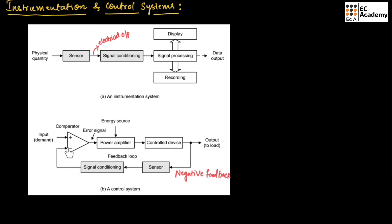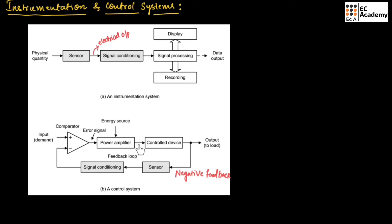The output of signal conditioning is again given as input to the comparator. In this control system, some portion of the output signal is fed back to the input, which is in turn compared with the input signal using a comparator. Depending upon the compared value or error signal produced by the comparator, the output will be controlled. The comparator senses the difference between the two signals. If any discrepancies are detected, the input to the power amplifier will be adjusted so that it can produce a signal that controls the control device to produce a proper output.